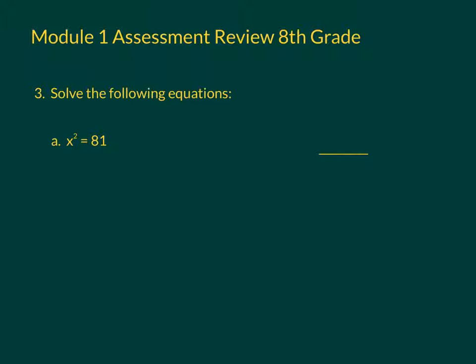This is number three, solving equations with the x squared in there. So for part A and B, we have x squared, and part C is x to the third. So for part A, we have x squared equals 81.